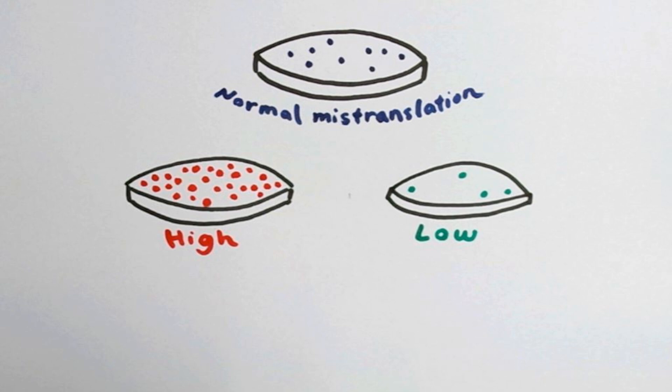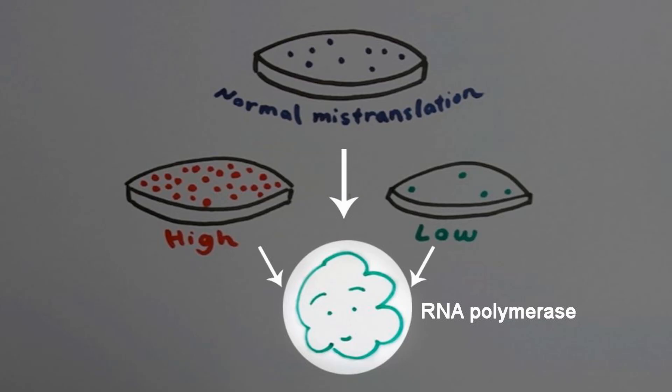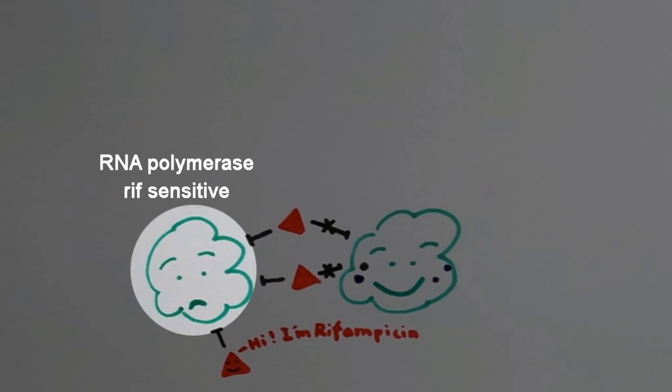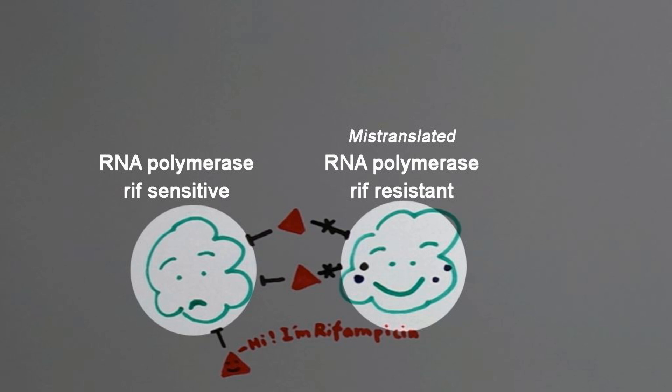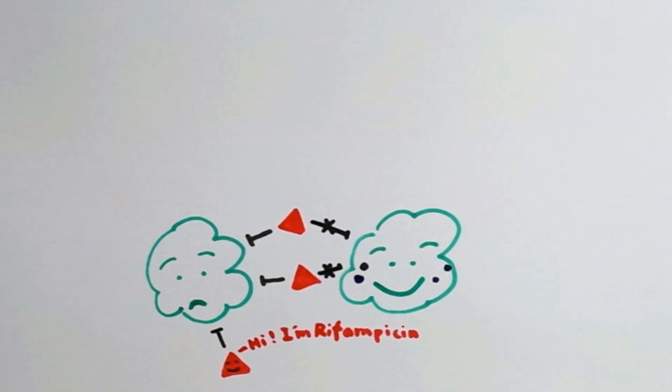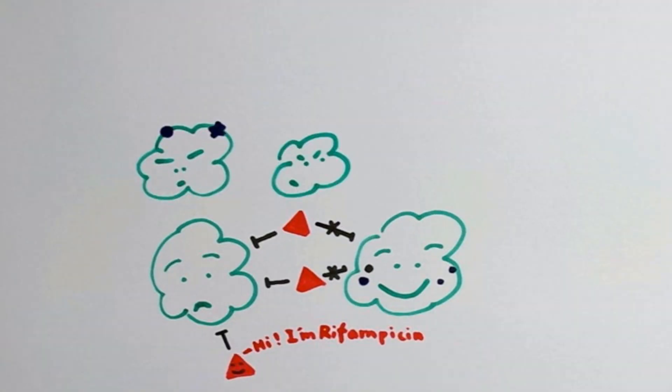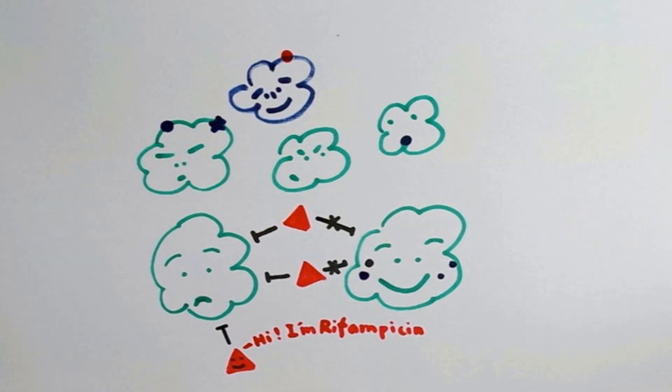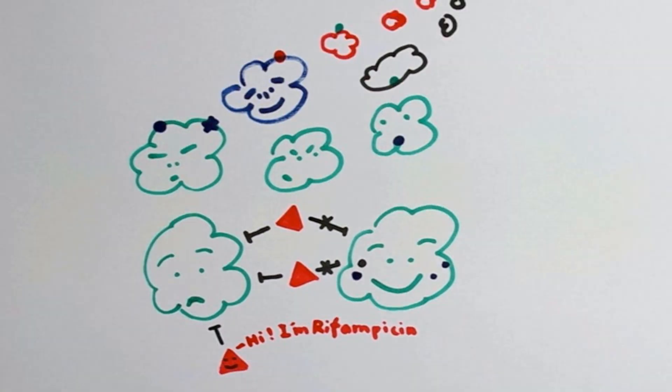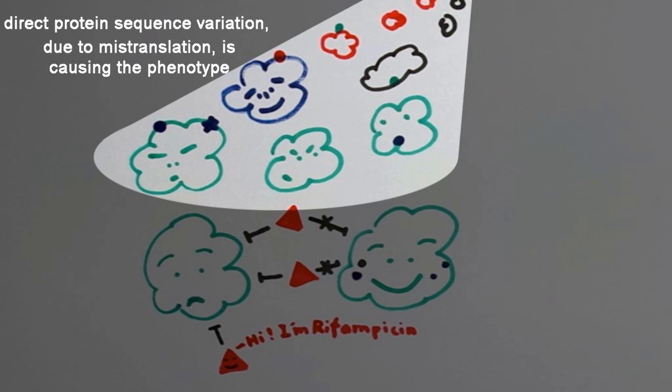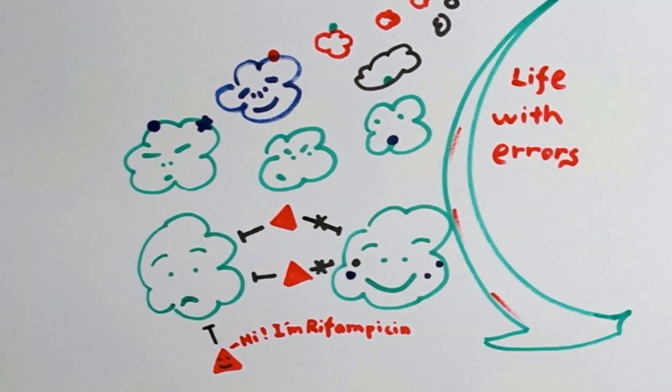We purified the drug target of rifampicin, RNA polymerase, directly from high, normal, and low mistranslating strains. We showed that the protein target also varies in rifampicin resistance in proportion to mistranslation rates. This suggests that direct protein sequence variation due to mistranslation is causing the phenotype. And even small changes in the resistance sequence variants, of about 1 to 5%, were enough to significantly affect the phenotype.